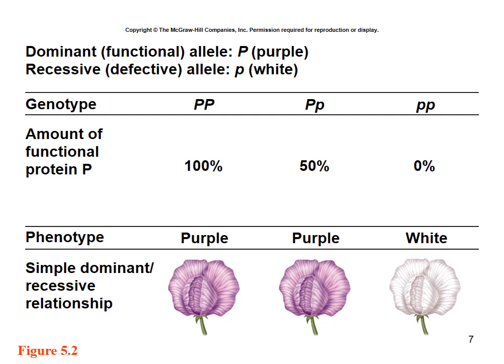Let me explain this with an illustrative example. We have an example of color formation in flowers. Our dominant, or wild type, allele is purple, indicated by capital P. Our recessive, mutant allele is indicated by lowercase p and produces white coloration. Since we are diploid organisms, from a genotype aspect we can inherit homozygous dominant — meaning both copies are capital P, indicating purple — a heterozygous mix with one dominant and one recessive, or a homozygous recessive mix where both inherited copies are defective.